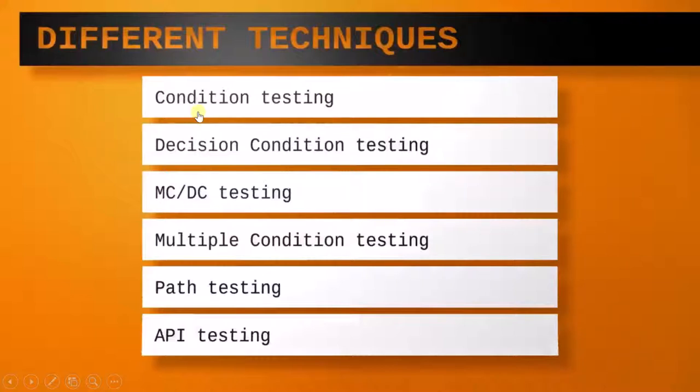So first such technique is condition testing. Then we will see about decision condition testing. Our third topic is going to be multiple condition decision testing. Then we will talk about multiple condition testing. And the last two topics will be path testing and API testing. So these are the type of techniques which we are going to study in this particular chapter.